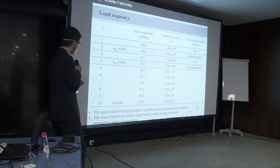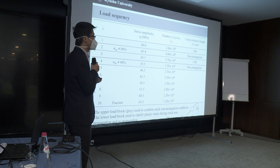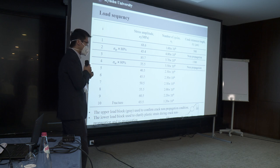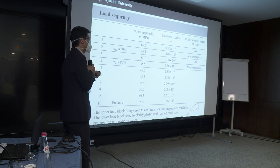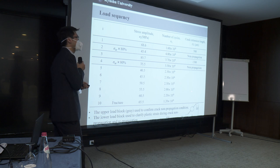The load sequence is as follows, which can be simply divided into two parts. The upper part actually is used to confirm the crack long propagation condition. In other words, I can decide at any time, any crack length that I want the crack to stop. And the following, the lower part, is used to clarify the plastic strain during crack long propagation and repropagation.